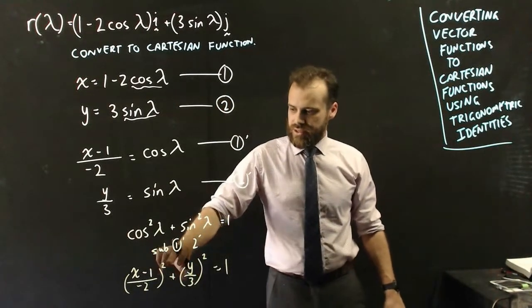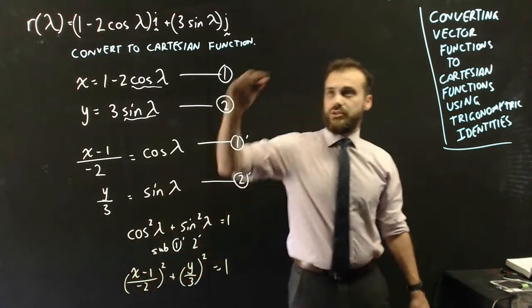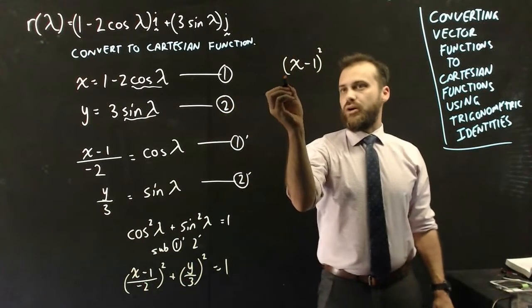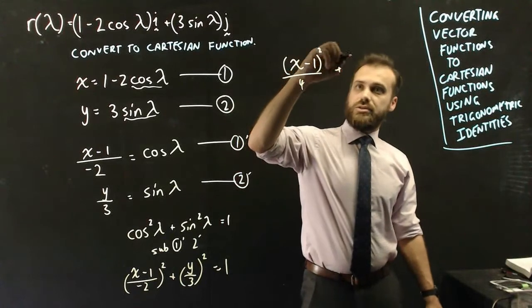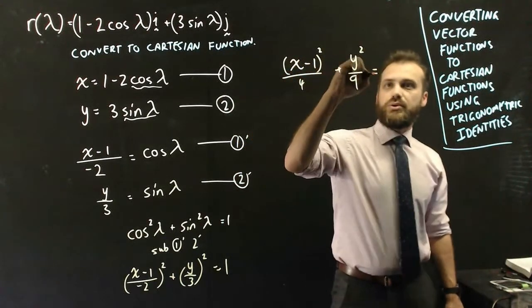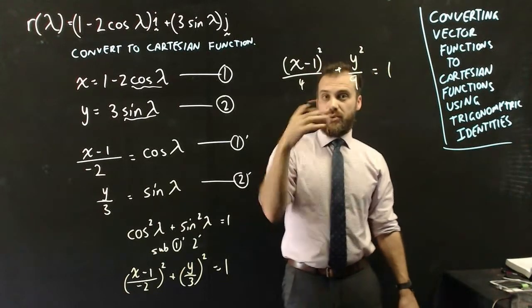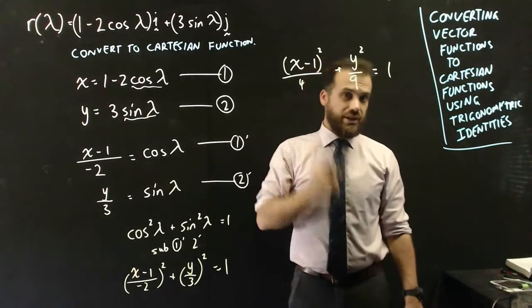What I'll just do is separate this. So this is squared, and then this is squared. So I'll just write it up here. It's going to be x minus 1 squared over negative 2 squared is 4, plus y squared over 9 equals 1. And now we have a Cartesian equation for this. I shouldn't really call it a function. That's not a function.